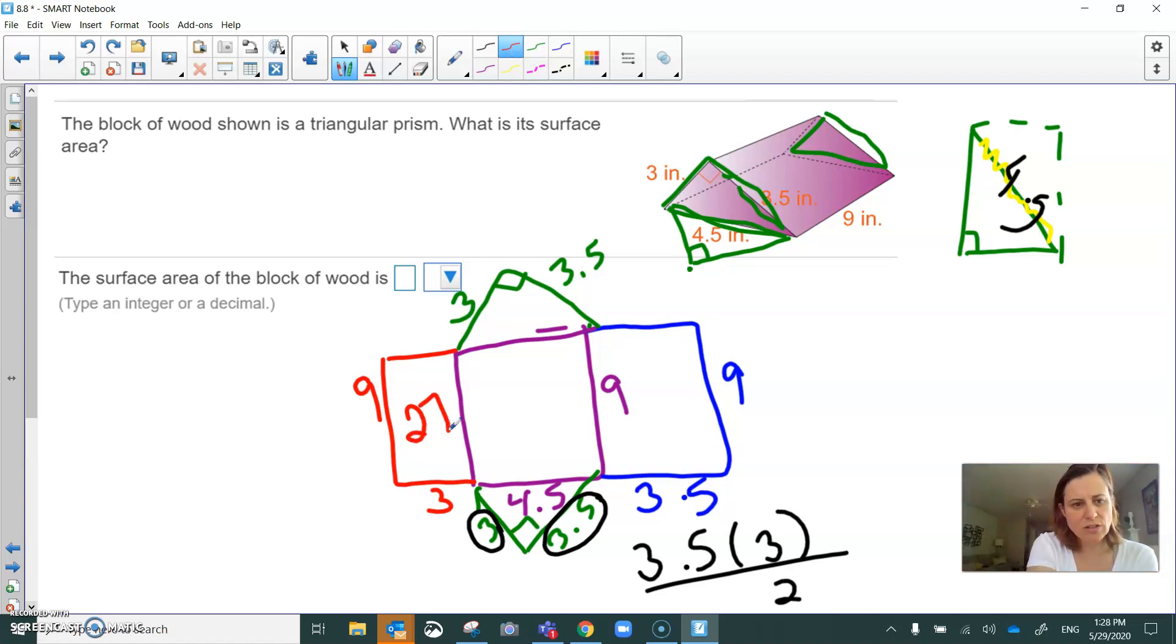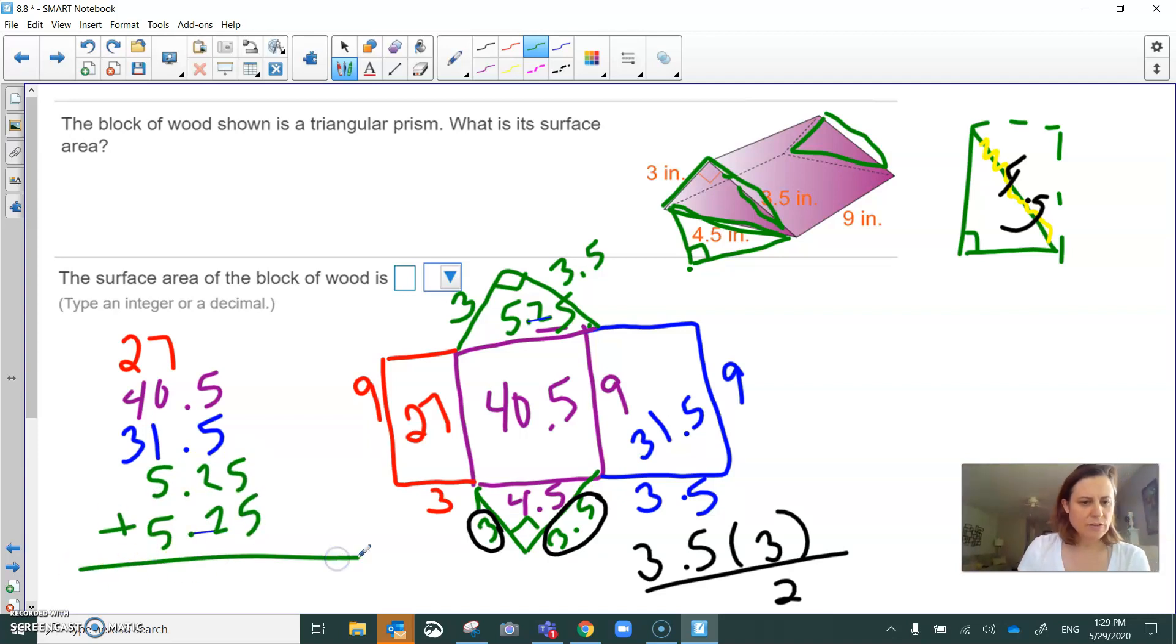We've got 27 inches squared. We've got 9 times 4.5, 40.5 inches squared. And then the blue section is 9 times 3.5, which is 31.5 inches squared. And then the last section is the triangle. 3.5 times 3 divided by 2. So each of those triangles is 5.25. And then when we add those all together, we should have the total surface area of that right rectangular prism. Just kidding, right triangular prism.